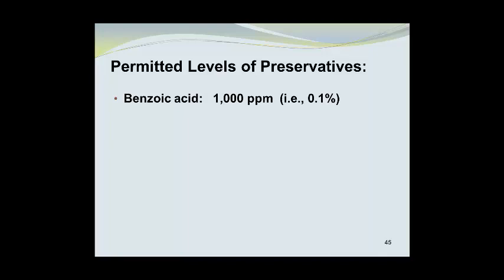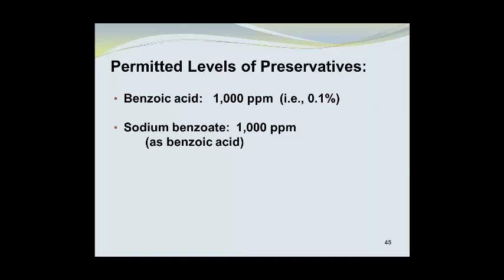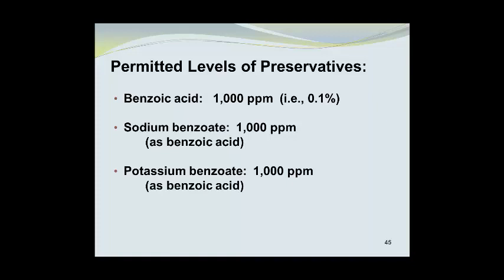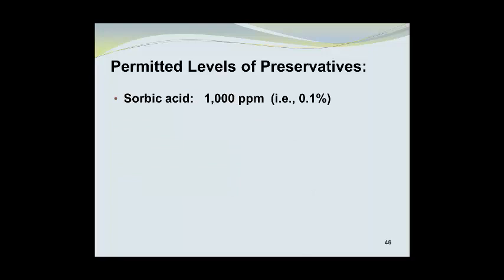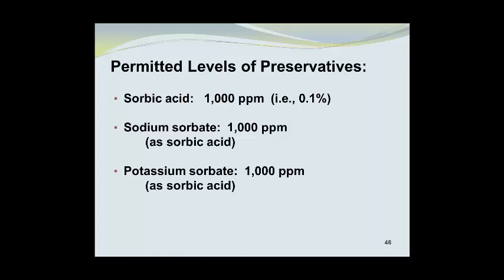Benzoic acid is permitted at levels up to 1,000 parts per million — that is, one-tenth of one percent. When using sodium benzoate, you need to also limit it to 1,000 ppm, but you need to express the concentration of sodium benzoate as if it were benzoic acid. Potassium benzoate follows the same limits: 1,000 ppm or one-tenth of one percent, also expressed on the basis of the equivalent to benzoic acid. Sorbic acid is limited to 1,000 ppm. Sodium sorbate and potassium sorbate must also be limited to 1,000 ppm expressed as sorbic acid.